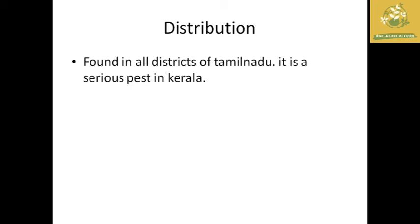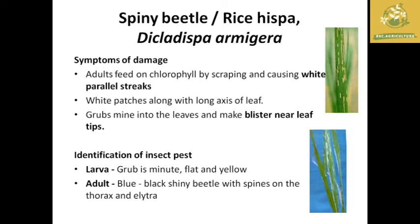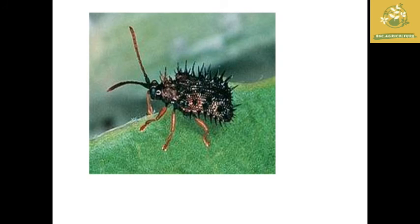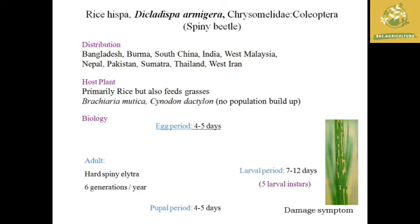The next pest is rice hispa beetle (also called painpettle or rice hispa) with scientific name Dicladispa armigera. Symptoms: adults scrape chlorophyll causing white parallel streaks on leaves; white patches along the long axis of leaves; larvae mine into the leaves and make blotch mines near leaf tips. Identification: larva is a flat, yellow leaf miner; adult is a blue-black shiny beetle with spines on the thorax and elytra. Distribution: Bangladesh, Burma, South China, India, West Malaysia, Nepal, Pakistan, Sumatra, Thailand, and West Iran.